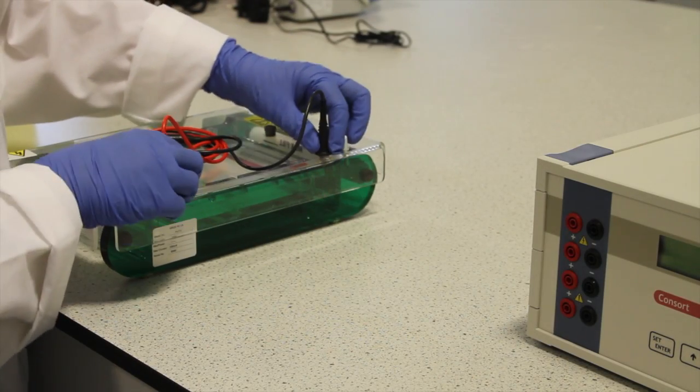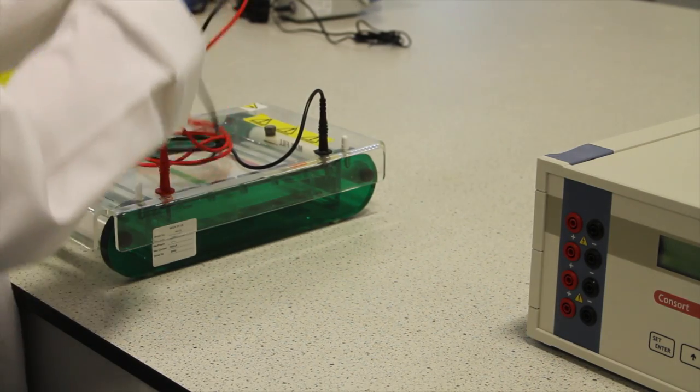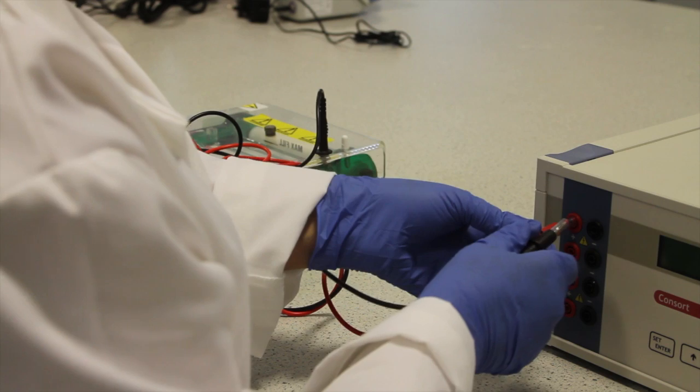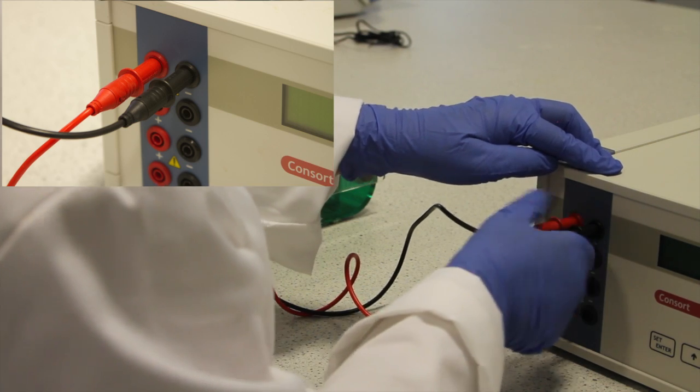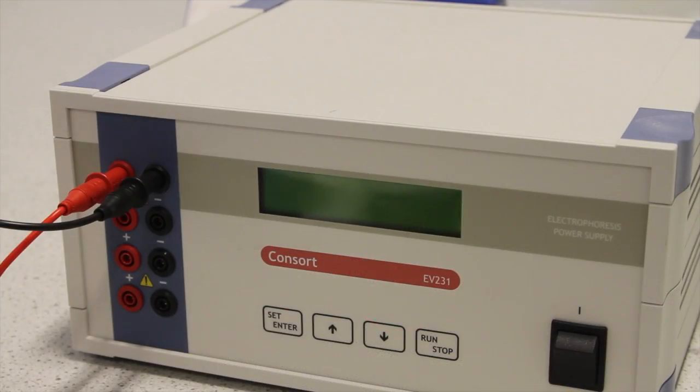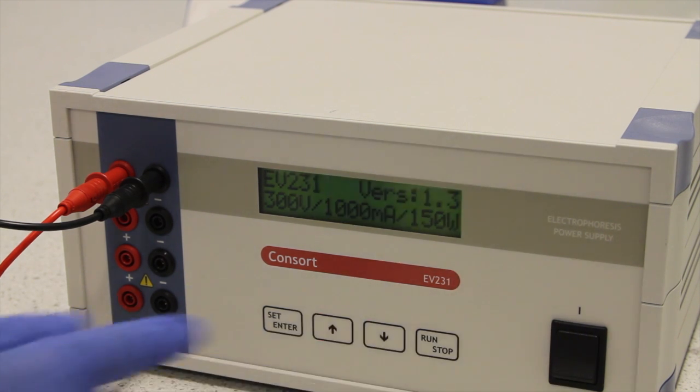Once the markers and samples are loaded, place the lid on the gel tank and connect the power leads to the power pack, ensuring these are connected in the correct order, red to red and black to black.